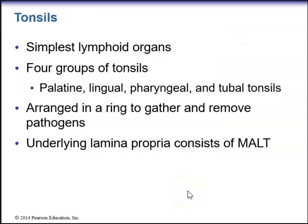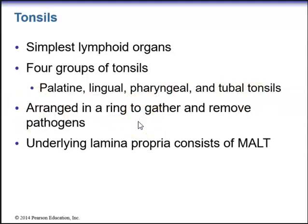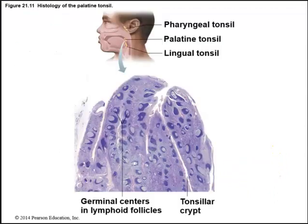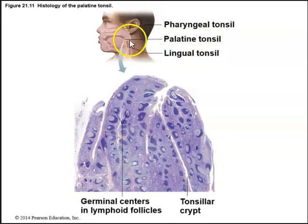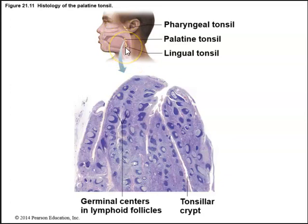The tonsils are the simplest of lymphoid organs, and we have four groups: the palatine tonsils, lingual tonsils, pharyngeal tonsils, and tubal tonsils. They are arranged in a ring that helps gather and remove pathogens. The underlying connective tissue or lamina propria consists of mucosa-associated lymphoid tissue or MALT. The pharyngeal tonsil is within the pharynx, the palatine tonsil is at the back of the throat near the palatine bone, and the lingual tonsil is at the base of the tongue.